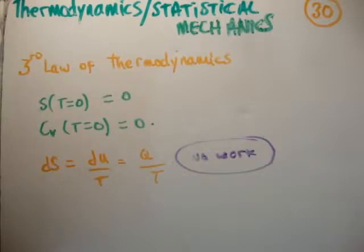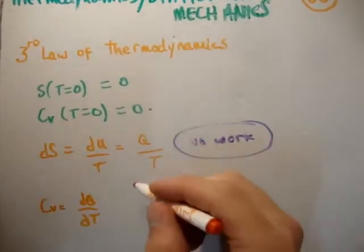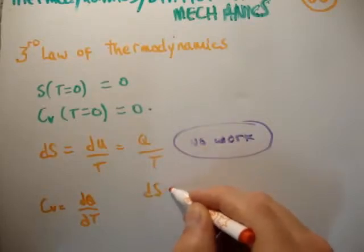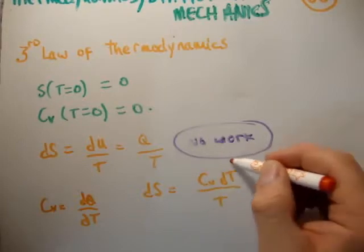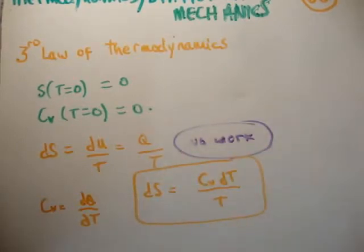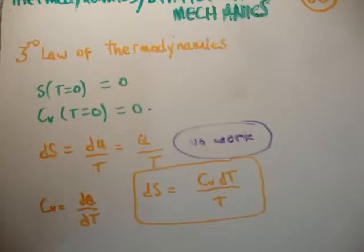So dS is equal to Q over T. Where do we go from here? Well, we've seen in the past also that the heat capacity at constant volume is equal to dQ/dT. So if we put these two together, we can get the following relation: that dS is equal to C sub V dT over T. Now what we have is an expression to compute the change in entropy.